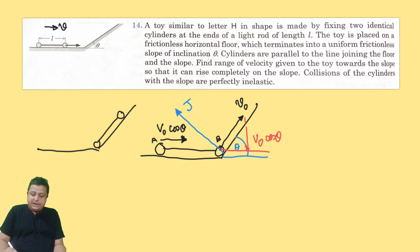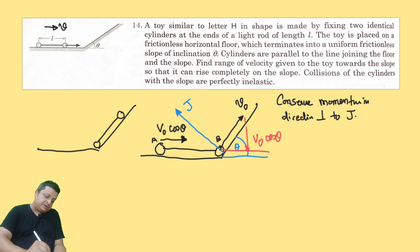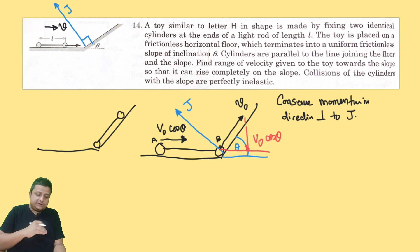We can conserve momentum in a direction perpendicular to the impulse J, which means along the inclined plane. Momentum along the inclined plane is conserved because the impulse J acts perpendicular to it. So initial momentum along the inclined plane equals final momentum along the inclined plane.